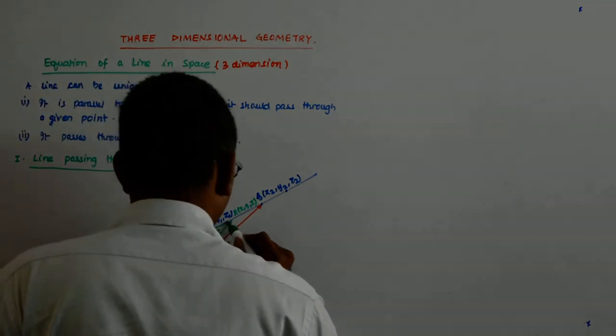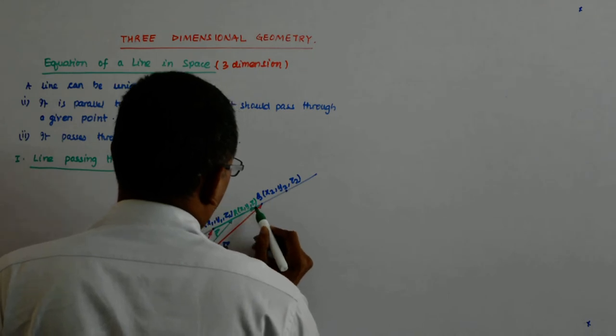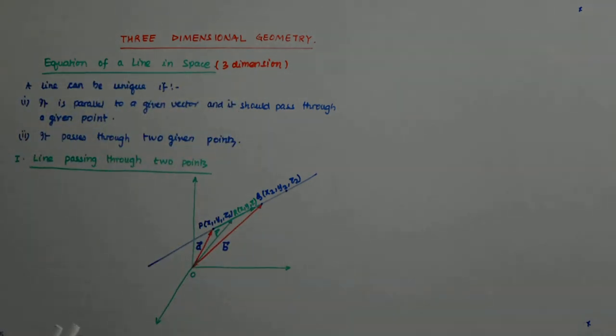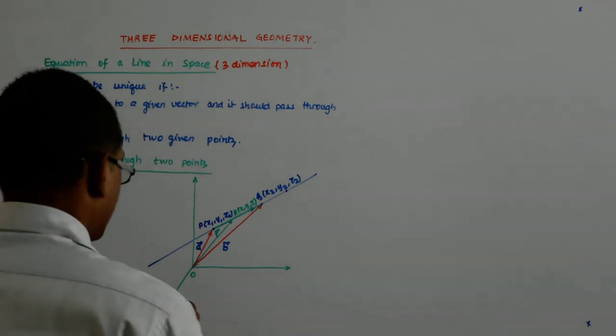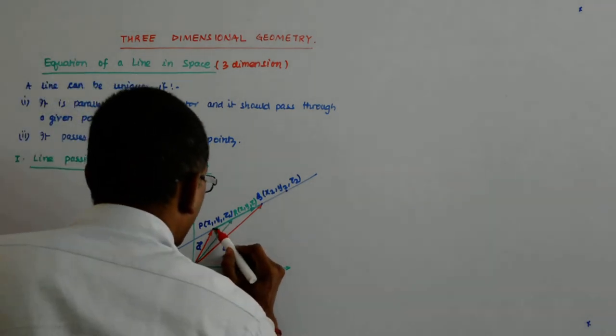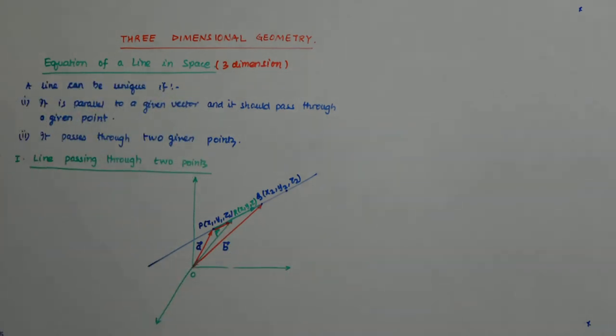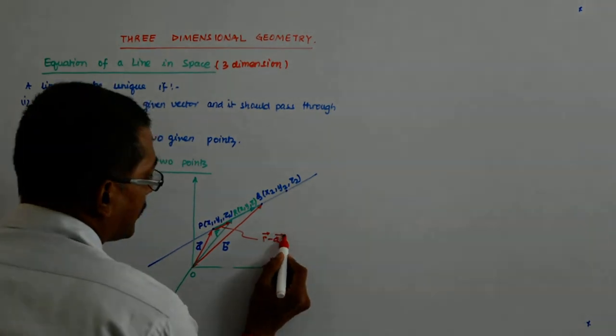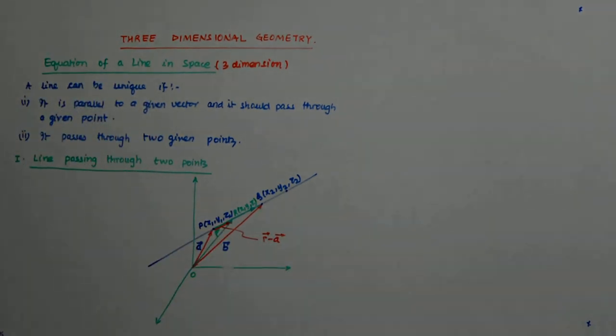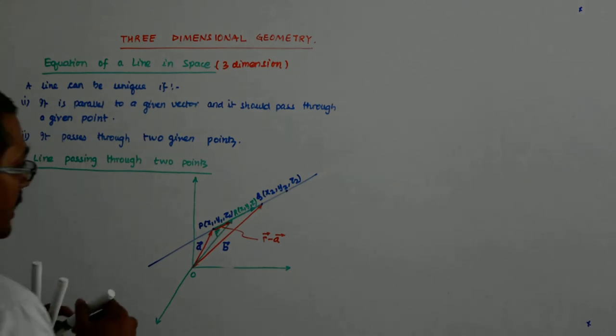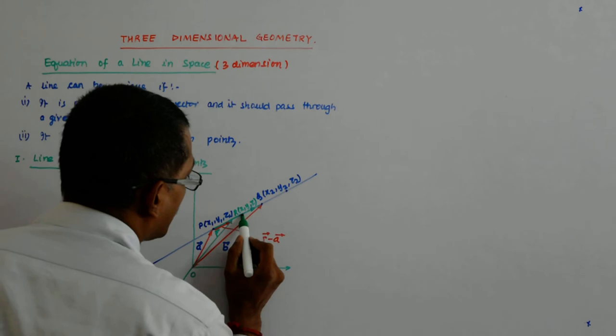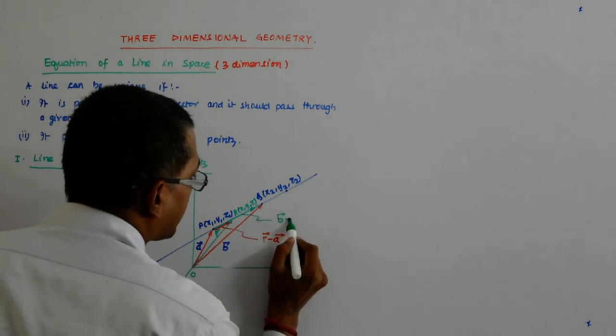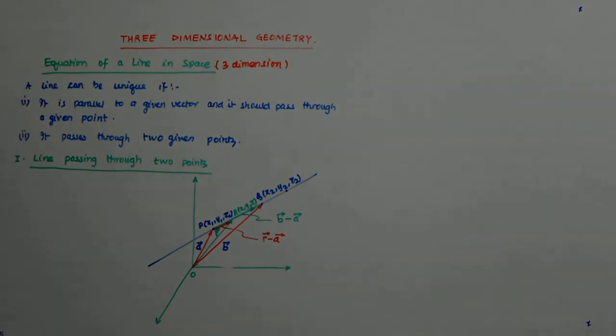B minus A is this. B minus A will be this green vector. I'm drawing it slightly below the green thing. This is R minus A. The red one is R minus A. Do you see that? And this big one connecting P and Q that is B minus A. Now, R minus A, since both of them are parallel, what can I write?